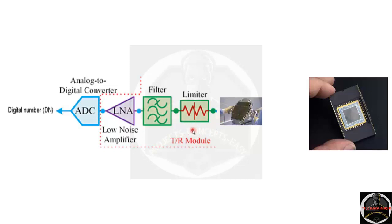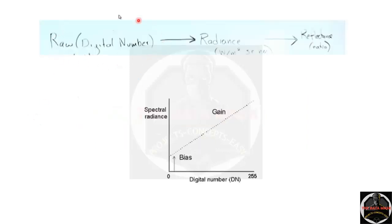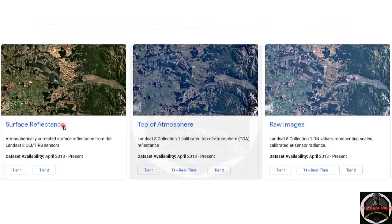The current generated by the CCDs is converted into a digital number. That digital number is a representation of the amount of energy collected by the sensor. That raw digital number, suppose 30, 40, 50, 60, is not so much relevant to us.